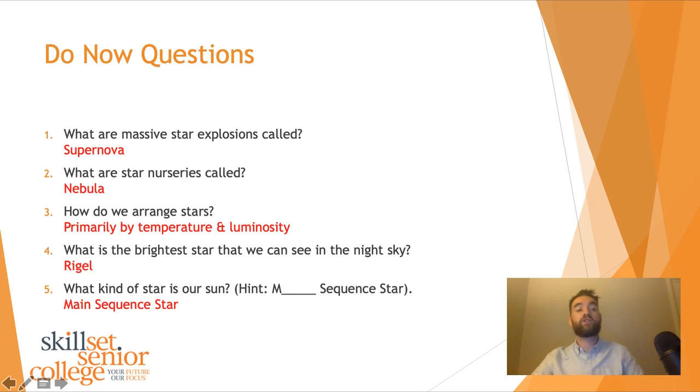Supernova or supernovae are really important because they forge all of the other chemical elements in the periodic table beyond iron, which is 26 protons. Question two, what are star nurseries called? These are called nebula. Nebulas are big clouds of dust and gas that eventually can collapse together to form a new star. We call them star nurseries.